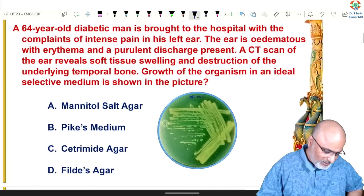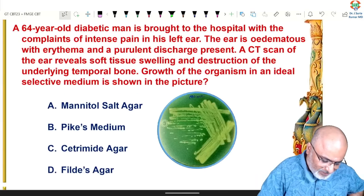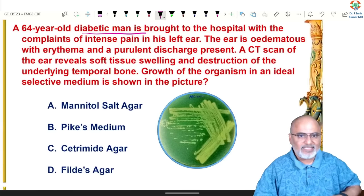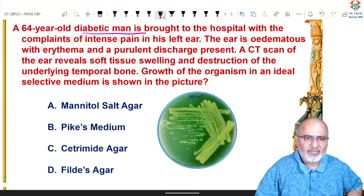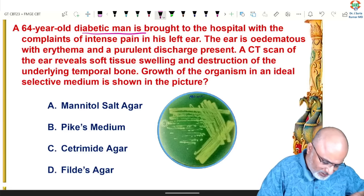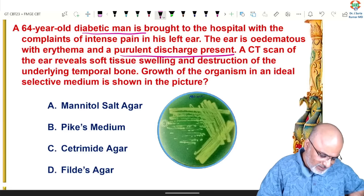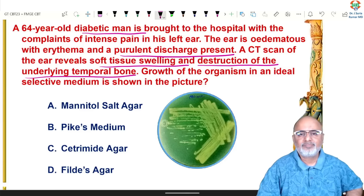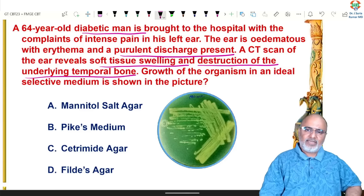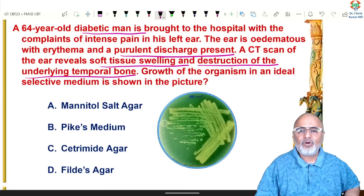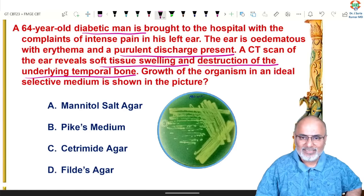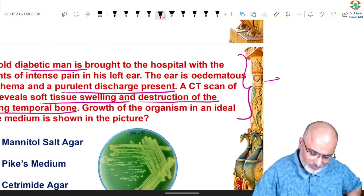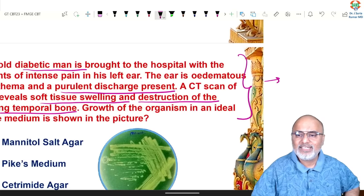Next question: a 64-year-old diabetic man is brought to the hospital with complaints of intense pain in his left ear. The ear is edematous with erythema and purulent discharge. CT scan reveals soft tissue swelling and destruction of the underlying temporal bone. The question asks about the ideal selective medium for the organism shown. This clinical picture is suggestive of malignant otitis externa.